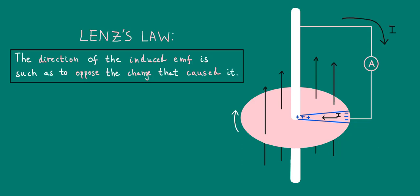To keep the disk rotating at a constant angular speed, work needs to be done continually on the shaft to overcome the resistive magnetic force.